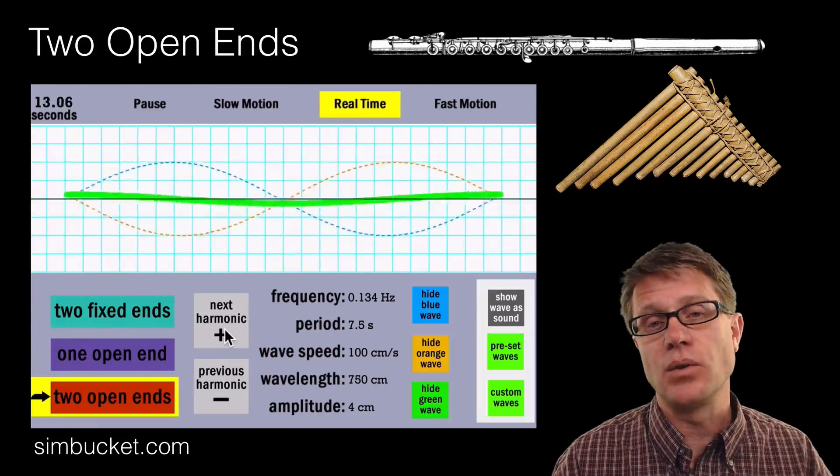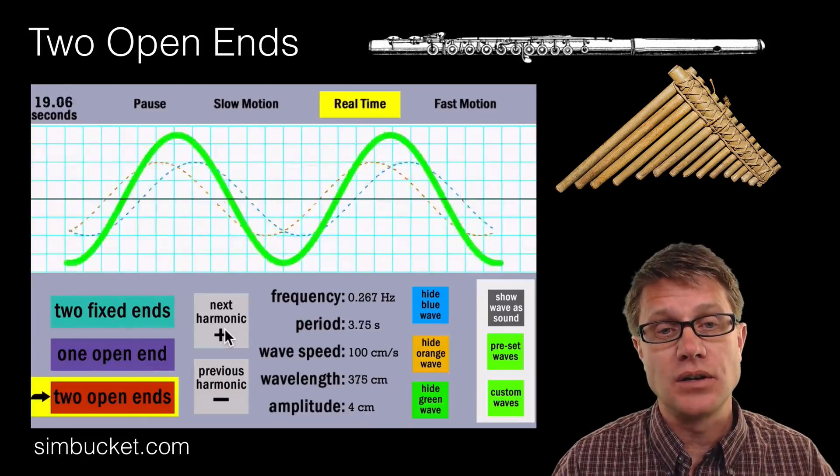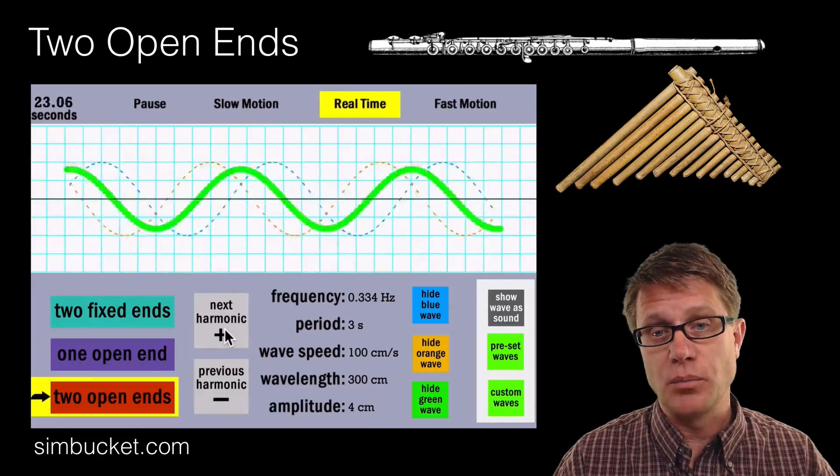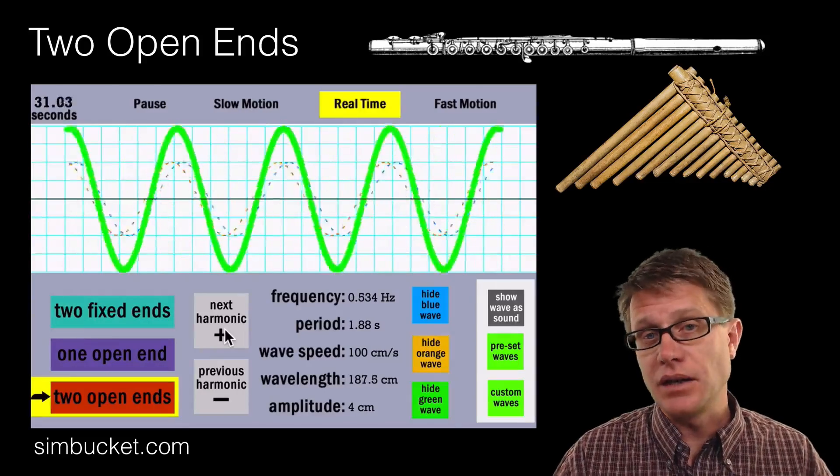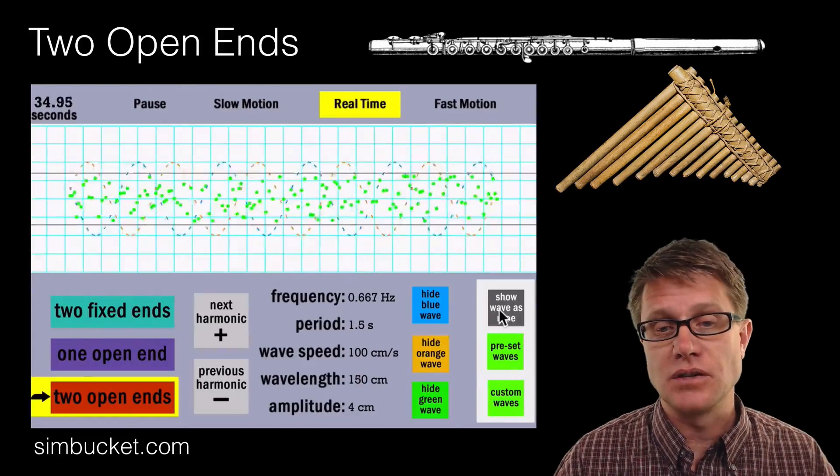So what is the characteristic of a standing wave in a chamber that has two open ends? It is always going to be an anti-node on either side. But depending on the frequency we can get different pitches as we blow through.